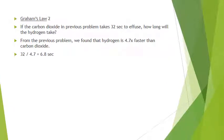Graham's Law problem two: if CO2 takes 32 seconds to effuse, how long does hydrogen take? Since hydrogen is 4.7 times faster, divide: 32 / 4.7 ≈ 6.8 seconds. That concludes the gas law problems. A test on this material will be given around the middle of next week. If you have any questions, let me know.